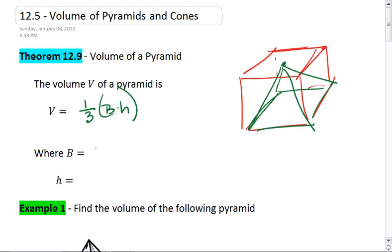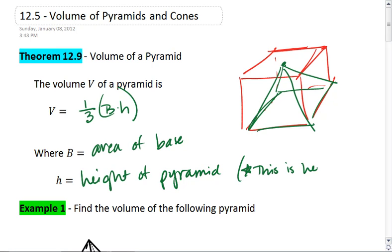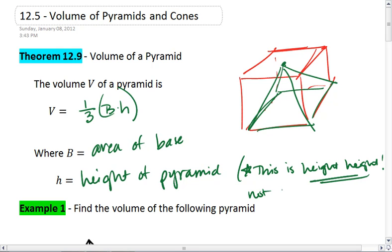Where B is the area of the base and h is the height of the pyramid. Make a note, this is height height, not slant height. So when we find the volume of a pyramid, we use the height height. When we find the surface area, we need the slant height.